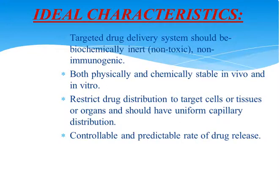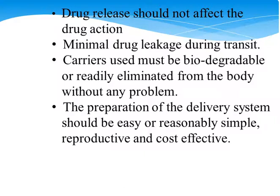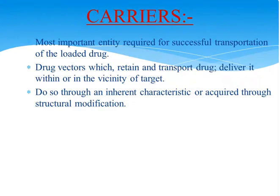Next are the ideal characteristics of a targeted system. It should be biochemically inert and non-immunogenic. Second, it should be physically and chemically stable both in vivo and in vitro. Third, it restricts the drug distribution to target sites, tissues or organs and should have uniform capillary distribution. It should be controllable and provide a predictable rate of drug release. Next, the drug release should not affect the drug action. Next is minimal drug leakage during transit, and the carriers must be biodegradable or readily eliminated from the body without any problem. Last, the preparation of drug delivery system should be easy, reasonably simple, reproducible and cost effective.